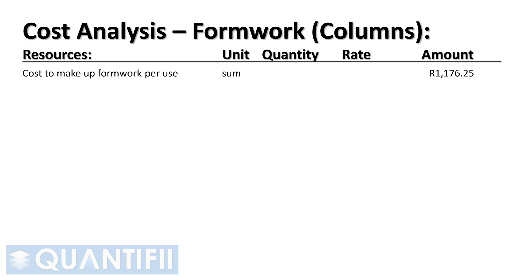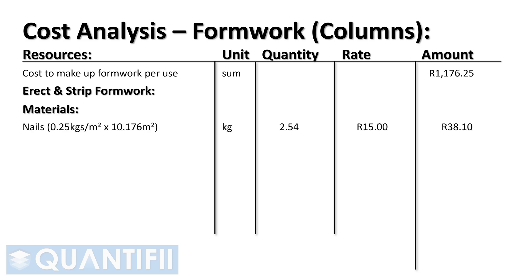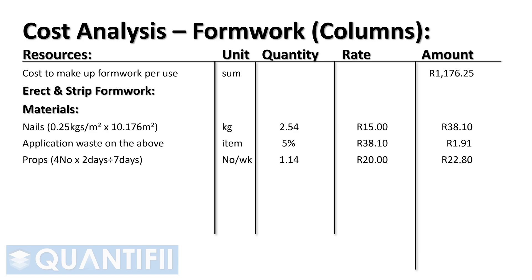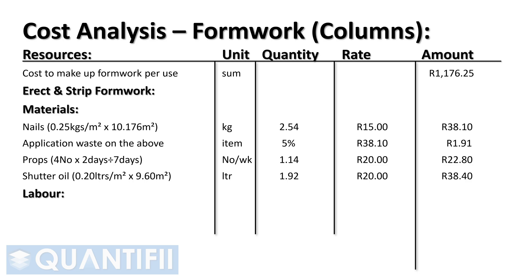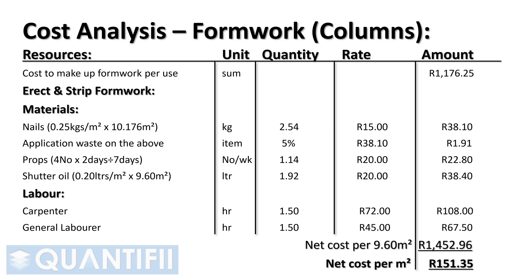We carry forward the cost to make up one column box. Next, we allow for erecting and later stripping the column box once the concrete has cured. Nails are assumed at 0.25 kg per m² with 5% waste. Four props are hired for two days (÷ 7 days per week). Shutter oil is applied at 0.20 L/m². The labor team erects and strips in 1.5 hours. Therefore the cost for one column's formwork is 1,452 Rand and 96 cents, giving a rate of 1,452.96 ÷ 9.6 m² = 151 Rand and 35 cents per m².